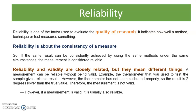Before moving ahead with Cronbach's alpha, let's understand what reliability is, because this is the concept where Cronbach's alpha is widely used. Reliability is one of the factors used to evaluate the quality of research. It indicates how well a method, technique, or test measures something — the variable we are measuring in our research.